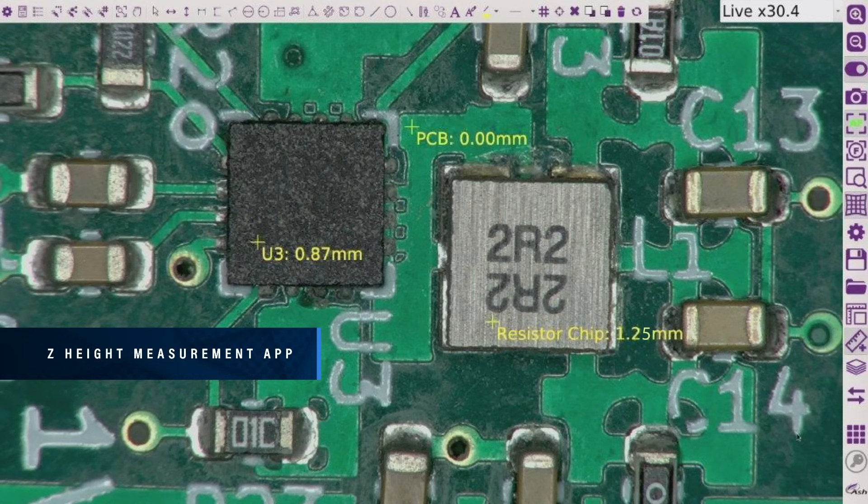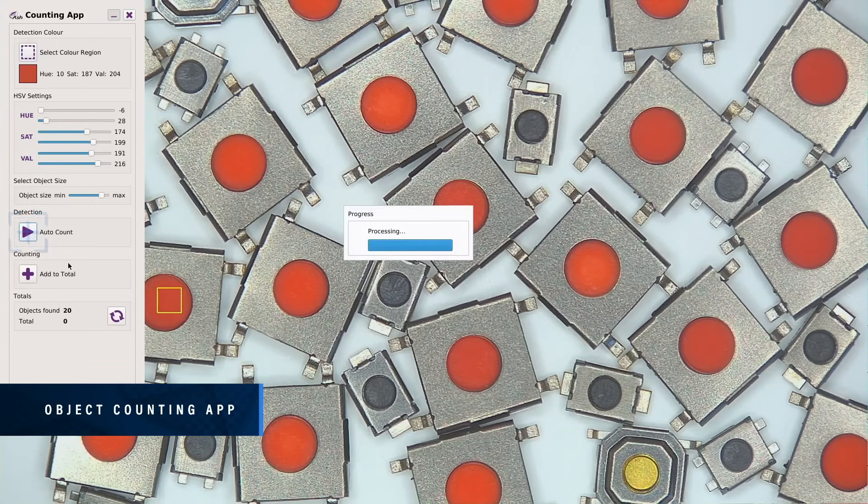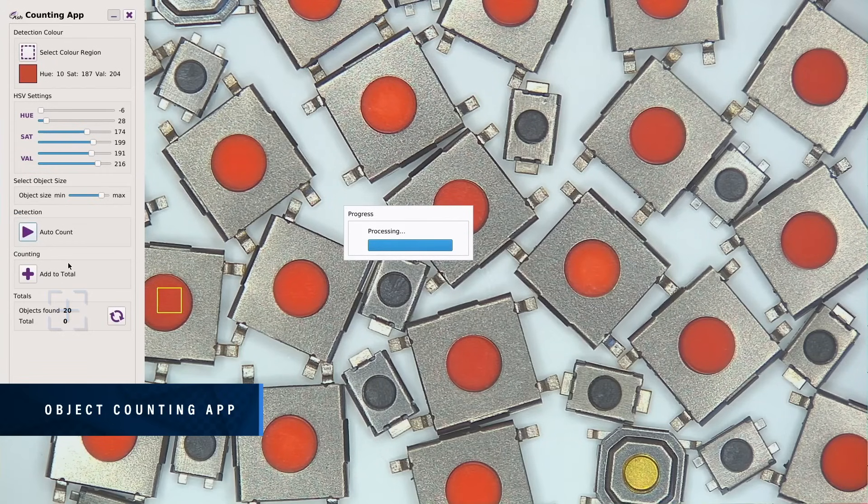Rapidly inspect parts up to 5 times quicker when compared to outdated manual inspection methods. Automatically identify and count the number of objects displayed on screen in a matter of seconds. Increase efficiency whilst completely eliminating human error.